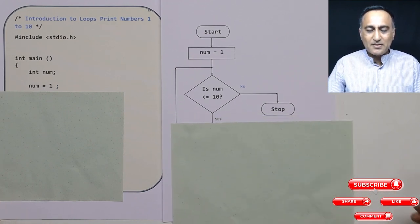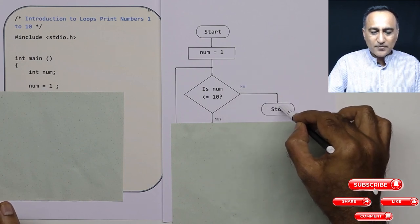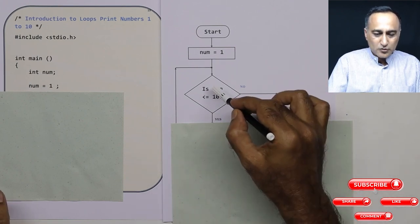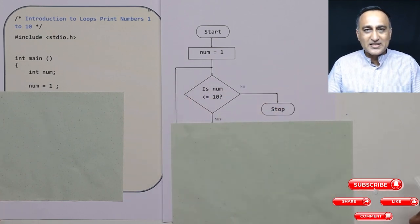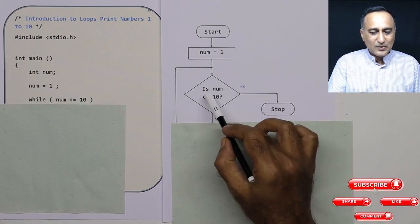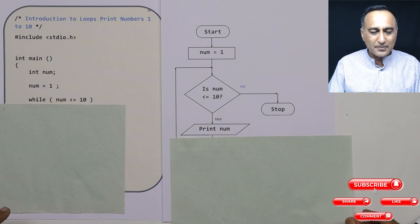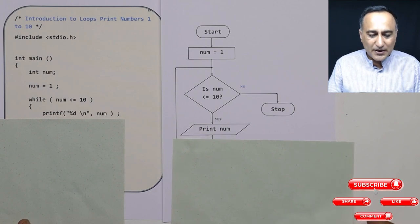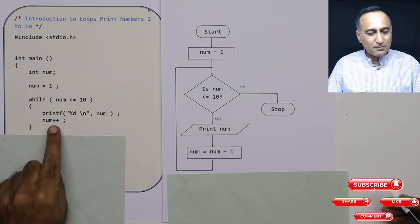The condition can be true or false — yes or no. If I have already printed the 10 numbers, I am going to stop. If I have not printed numbers till 10, I am going to continue. Since this is a block of statements executing again and again, I am going to do it using the while statement in C: while number less than or equal to 10. I am printing the number within the loop, then increasing the value of number by one — number equals number plus one.